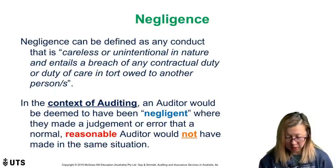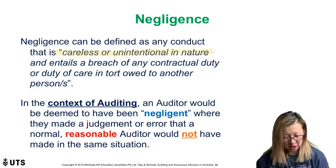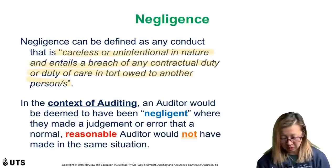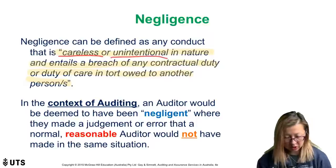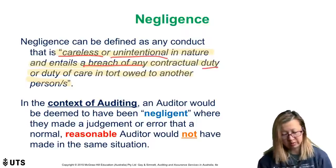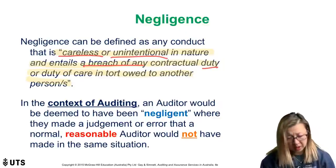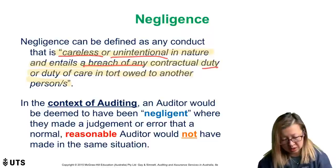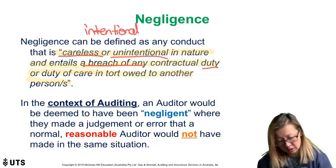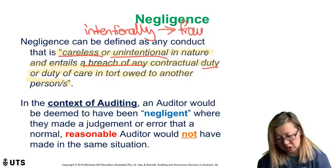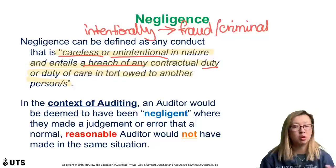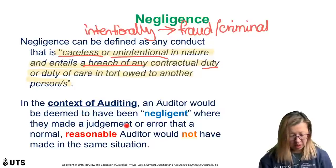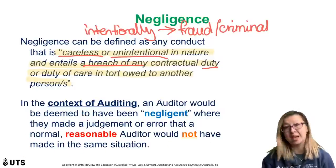Negligence has a specific meaning in law: careless or unintentional in nature, entailing a breach of a contractual duty or a duty of care in a tort owed to another person. Key words: careless, unintentional in nature, breach of a duty. For example, if you come back to work hung over and do a poor job of making professional audit judgments, you've been careless. Note it doesn't say intentional — if you're intentionally doing the wrong thing, you've potentially engaged in fraud or a criminal act, which falls under a different jurisdiction. In the context of audit, we would have been negligent if we made a judgment or error that a normal, reasonable auditor would not have made in the same situation.